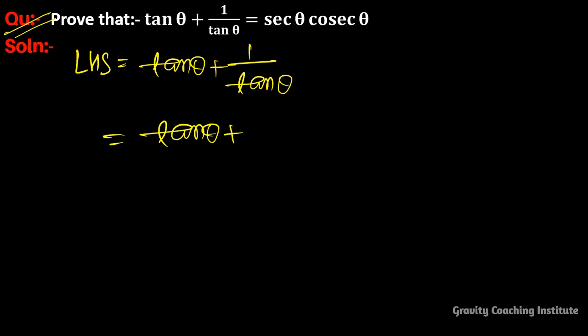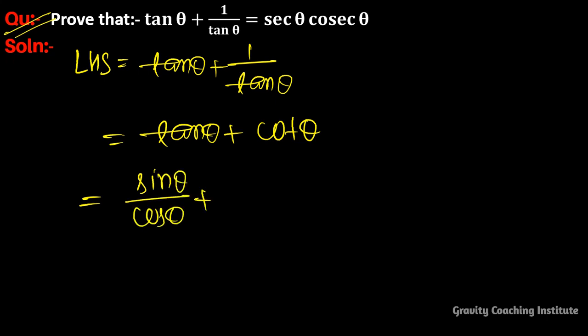We know that the formula of 1/tan θ is equal to cot θ. Now we use the identity: tan θ = sin θ/cos θ and cot θ = cos θ/sin θ.